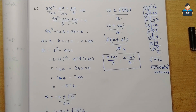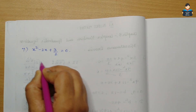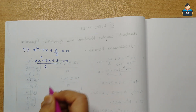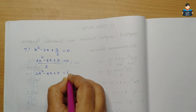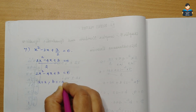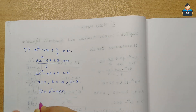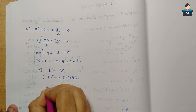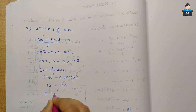Now let's look at the 7th sum. It is similar to the 6th sum, solved in the same way. Taking the LCM, we get 2x² - 4x + 3 = 0. Cross-multiplying gives 2x² - 4x + 3 = 0. Identify: a = 2, b = -4, c = 3. Find D = b² - 4ac = (-4)² - 4 × 2 × 3 = 16 - 24 = -8.